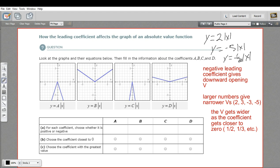Well, first of all, if you have a negative like this one, it flips the V upside down and you get this downward opening V. Looking at these examples, you can tell this has a negative coefficient, this has a negative coefficient, while these two are positive because they open upward.